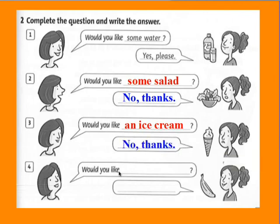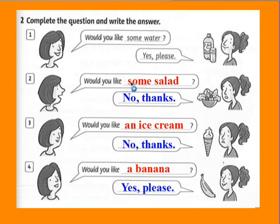Number four: Would you like a banana? The person is smiling — they accept. Yes, please. This exercise is quite easy. The main thing is to pay attention to singular/plural and countable/uncountable nouns to use 'some', 'a', or 'an' correctly. Now correct your exercises.